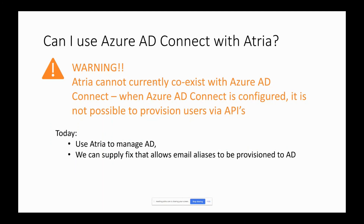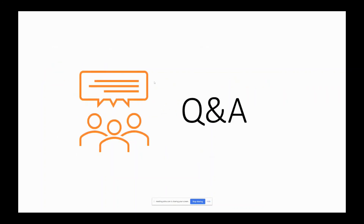Regarding Azure AD Connect coexistence with Atria: for tenants that we are syncing and managing, we cannot currently coexist with Azure AD Connect, because when Azure AD Connect is configured it will block any changes being made to users via APIs. If you have this requirement, you can still use Azure AD to manage AD, and we can still handle email aliases provisioned by AD. We are working on a set of enhancements that will allow user provisioning to be handled by Azure AD Connect while license assignment is controlled by Atria. This capability will be coming soon. On that point, I'd like to open for any questions and answers.